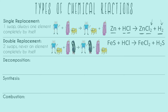Here's one more example of double replacement, bringing in common ions. In this second example, we have silver — that's one unit — and then we have NO3, which is nitrate, a common ion. So even though we have three elements in this first molecule, we actually still just have two components: silver and nitrate.